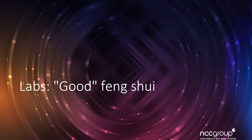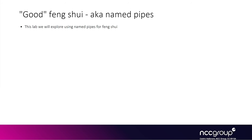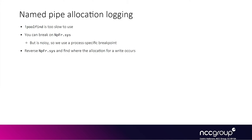We'll go over the second lab now, which is about experimenting with heap feng shui using named pipes. We will see how efficient it is to use named pipes, and more specifically the named pipe writes for the feng shui. As we've seen before, the pool find command can be quite slow.